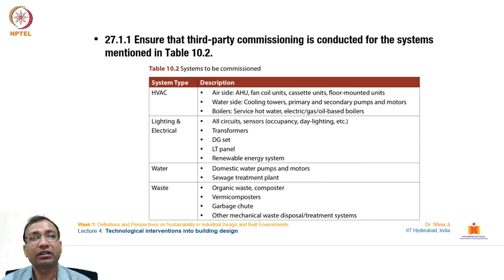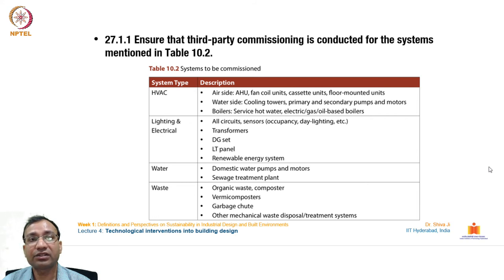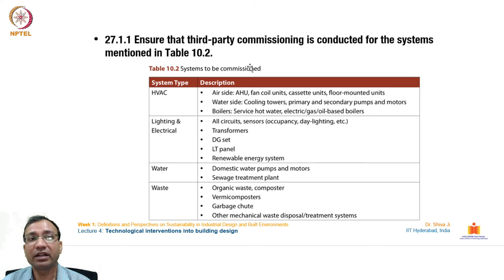The commissioning table covers key building services including HVAC (air-side: AHU, fan coil units, cassette units; water-side: cooling towers, chillers, primary and secondary pumps, boilers), electrical and lighting (all circuits, sensors, occupancy/daylighting controls, transformers, DG sets, LT panels, renewable energy systems), and water and waste systems (domestic water pumps, sewage treatment plants, organic waste composters, vermicomposters, and mechanical waste disposal systems).